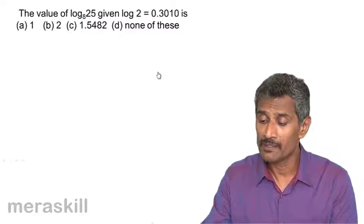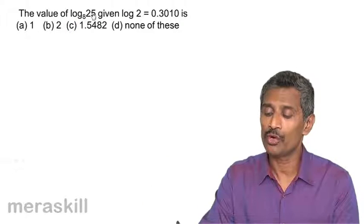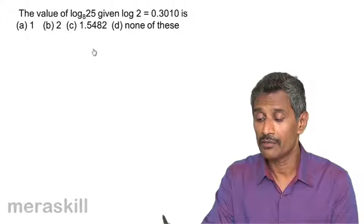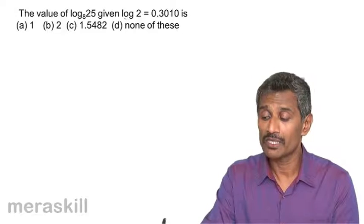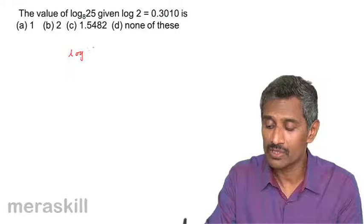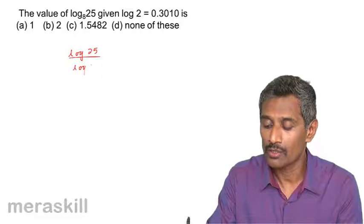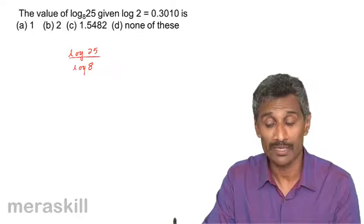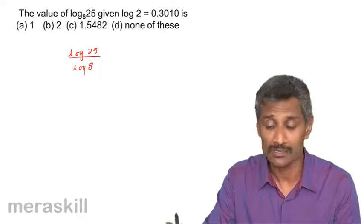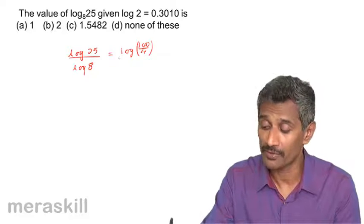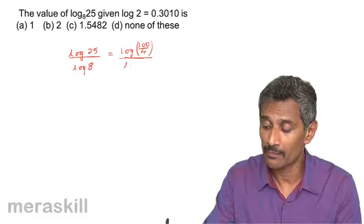Now we have: find the value of log 25 to the base 8, given log 2 equals 0.3010. We only know the value of log 2 and we know log 10 = 1. Using change of base, log 25 to the base 8 can be written as log 25 over log 8. This can be further written as log(100/4) over log 8, mainly because we know the log of powers of 10.